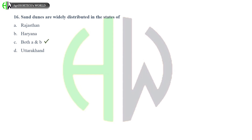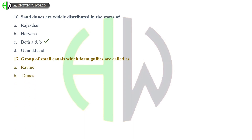Group of small canals which form gullies are called as: Ravine, Dunes, Dry rocky, or Murumi? And the correct answer is Ravine.